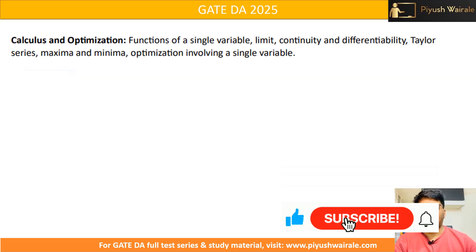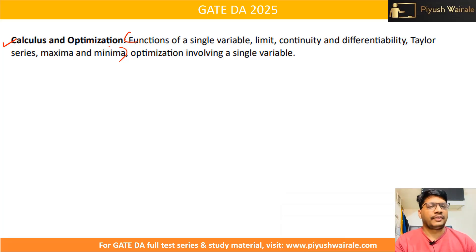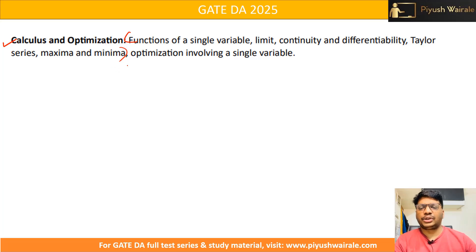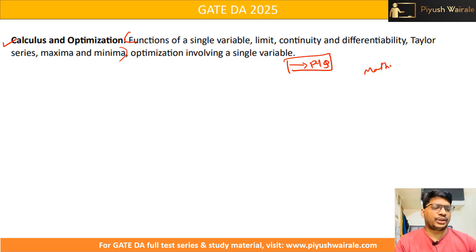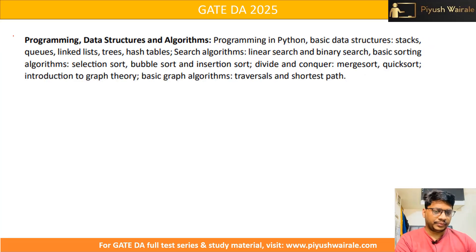For Calculus and Optimization, topics are similarly covered in Maths 1 and Maths 2, but only at an overview level — not in depth. The assignment questions in IITM BS may not be at GATE level for these topics. Therefore, for calculus and optimization, it is strongly recommended to focus on previous year questions. In GATE DA 2024, almost all calculus questions were similar to previous GATE questions from other branches. Go through Maths 1 and Maths 2 content for understanding, then focus heavily on previous year questions.